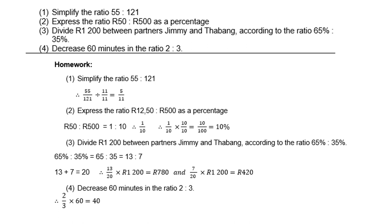The third one, divide R1200 between partners Jimmy and Thabang according to the ratio 65% to 35%. So 65% is to 35% is same as 65 is to 35. Remember, you must lose the units. Simplify, and you get 13 is to 7. We can, of course, divide by 5.